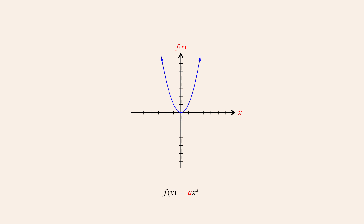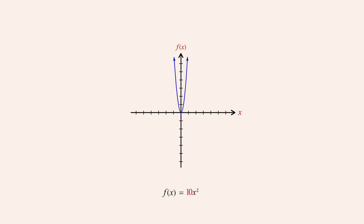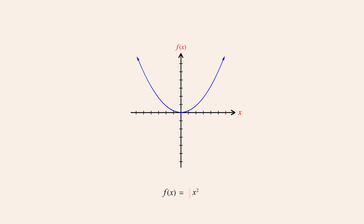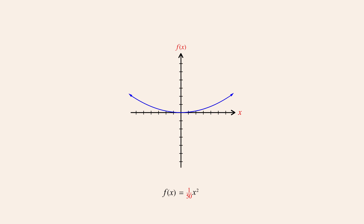Only the constant a affects the parabola's shape, determining whether the parabola opens up or down and how tightly it curves. Increasing the value of a stretches the parabola vertically, producing a narrower parabola, and decreasing the value of a shrinks the parabola vertically, producing a wider parabola. As the value of a approaches zero, the parabola approaches a horizontal line, but since a cannot be zero, the parabola must always have some curvature. Negative values of a cause the parabola to open down, and larger magnitudes produce narrower parabolas.